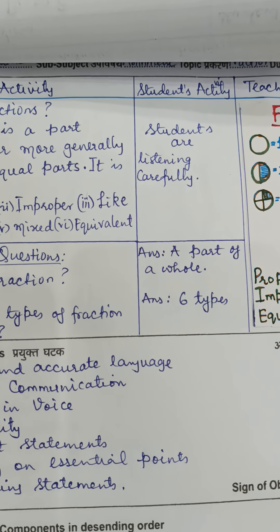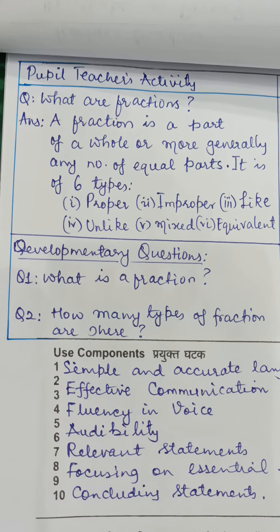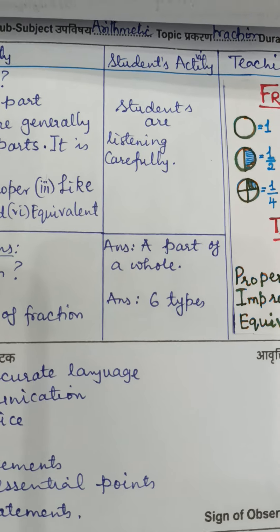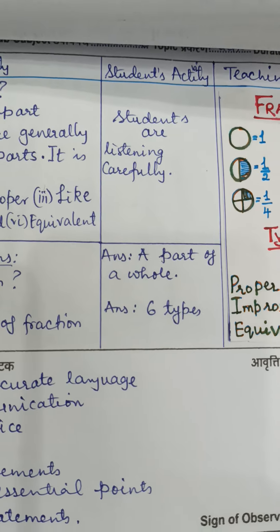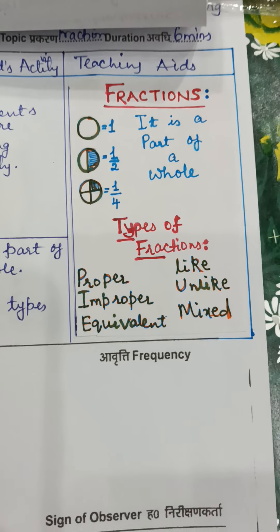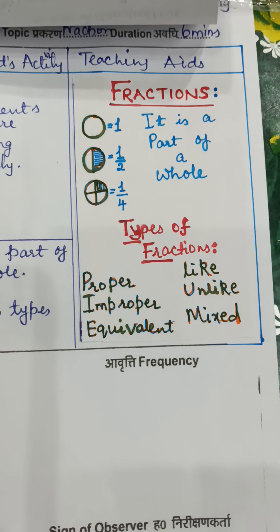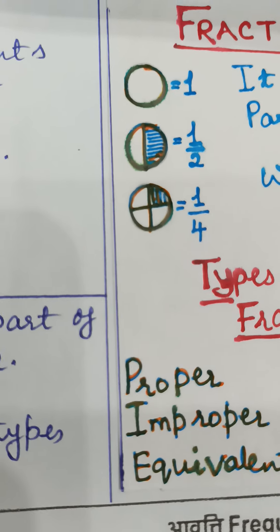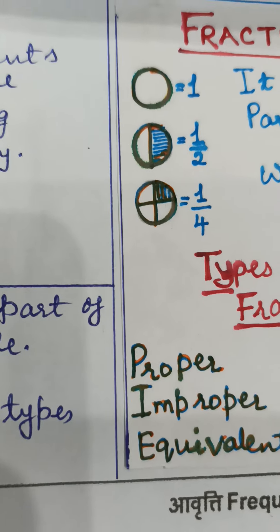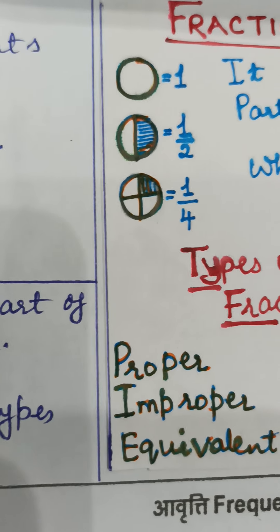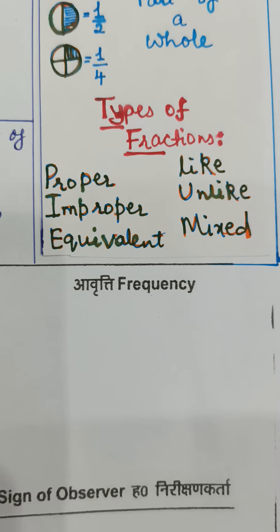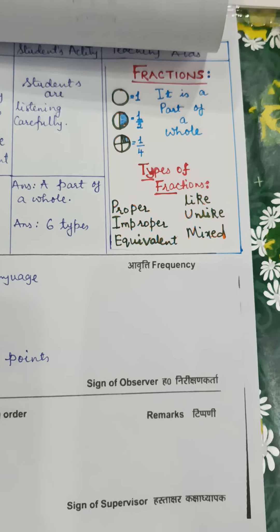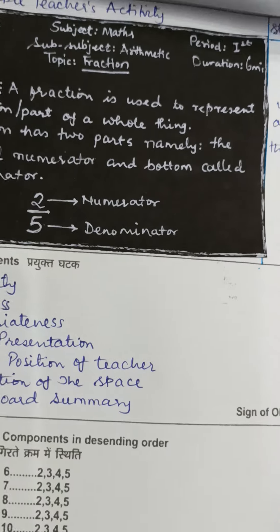While we're explaining, the students listen carefully — that is the student activity. After explaining, we have developmental questions: what is a fraction and how many types are there? If the students can answer these, it means we have successfully explained. We also make use of teaching aids — a chart containing the topic fraction, a brief definition, some drawings showing a whole equals one, one half is one-by-two, one part divided into four is one-by-four — and the types of fractions are also listed.